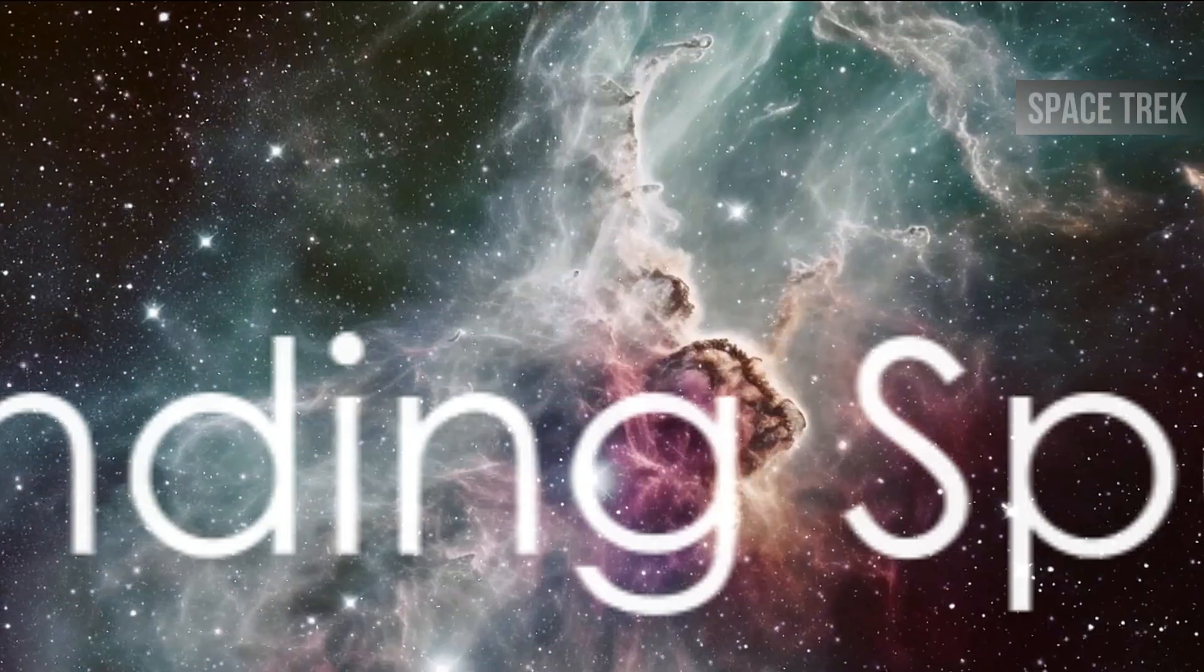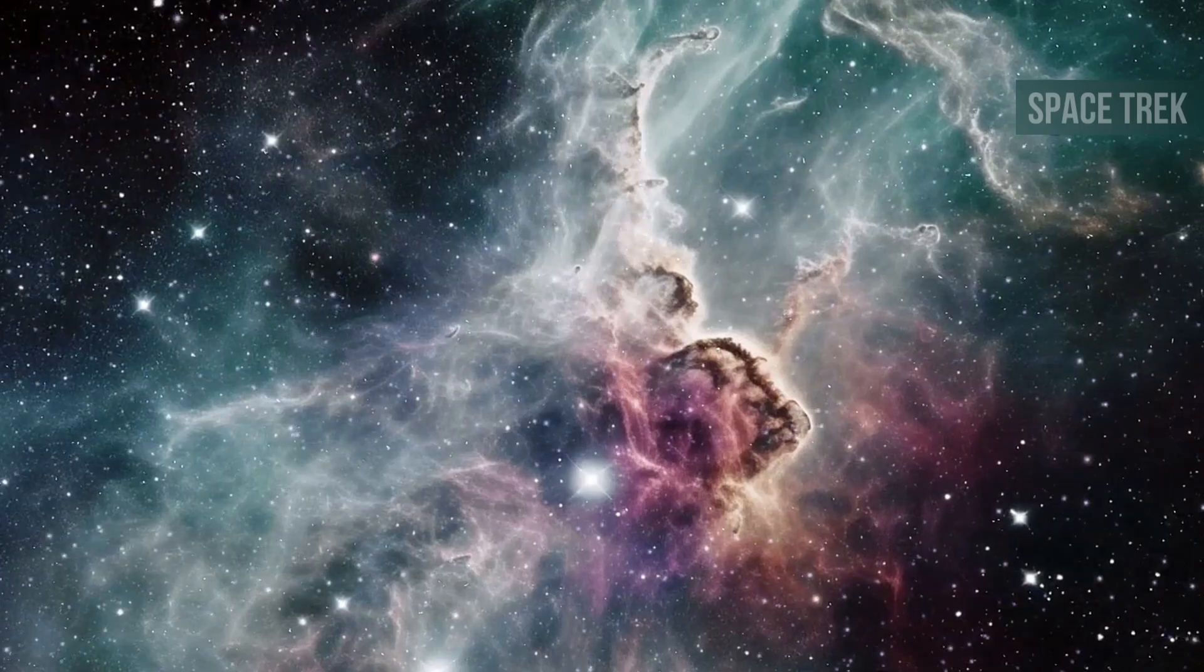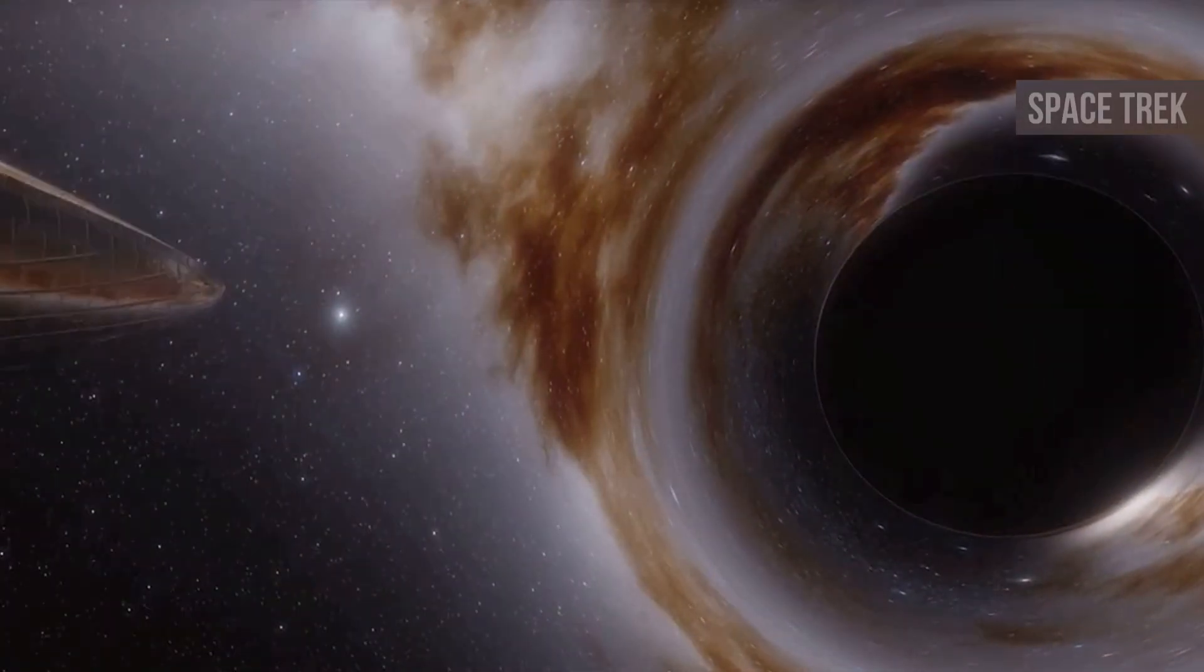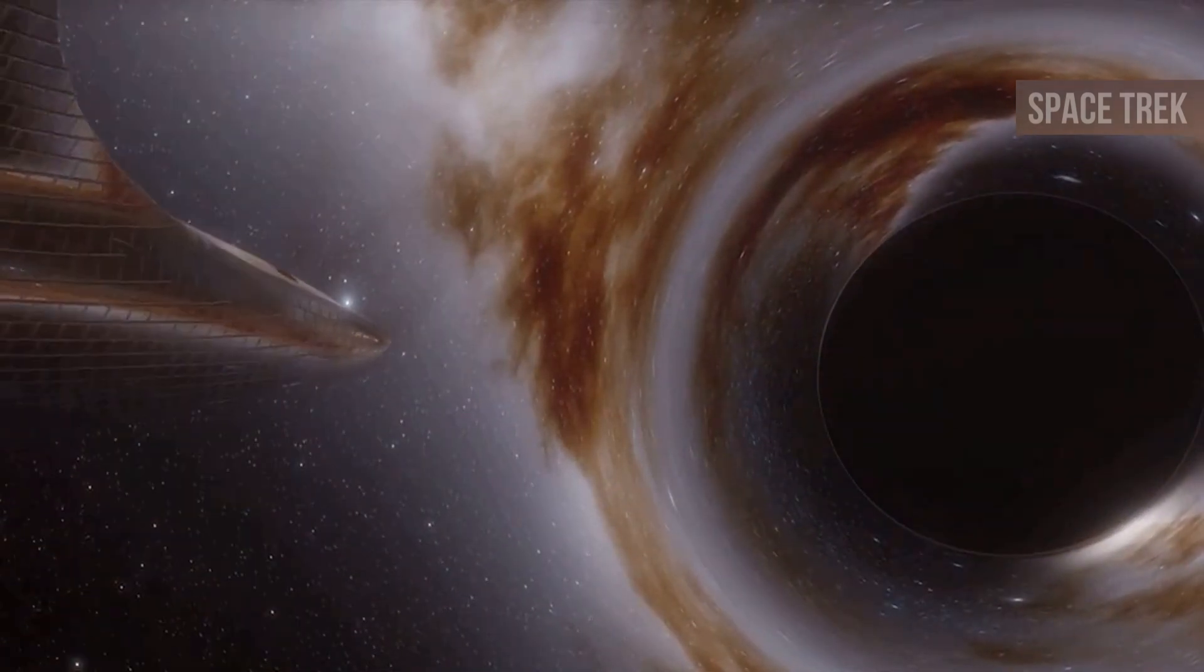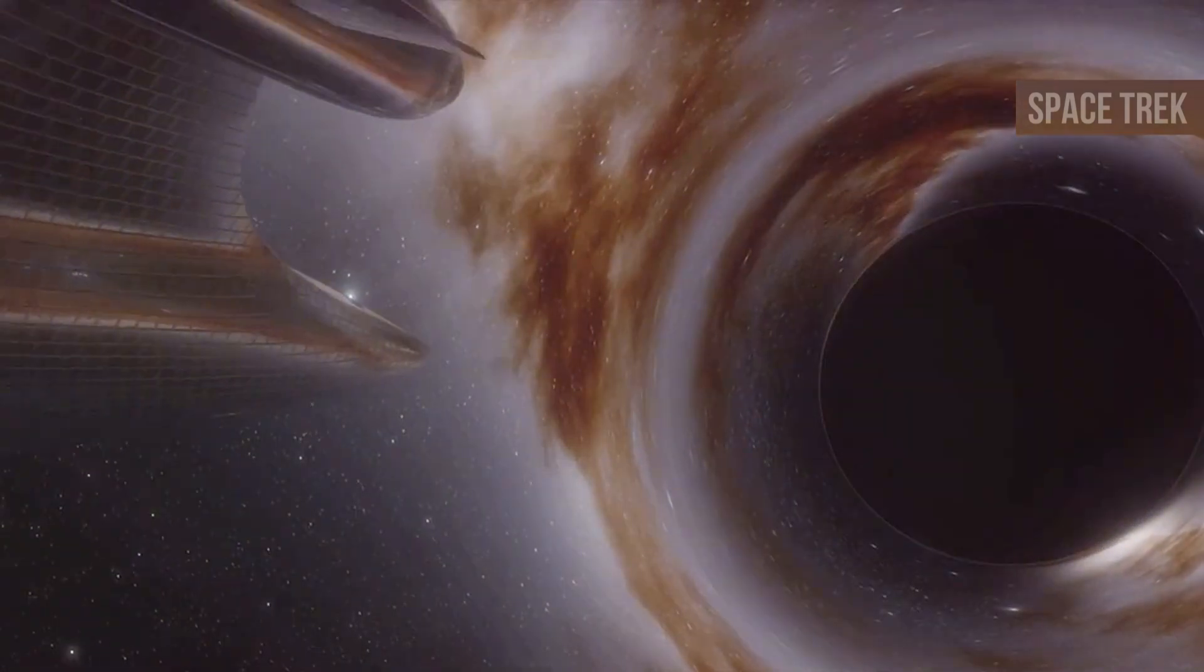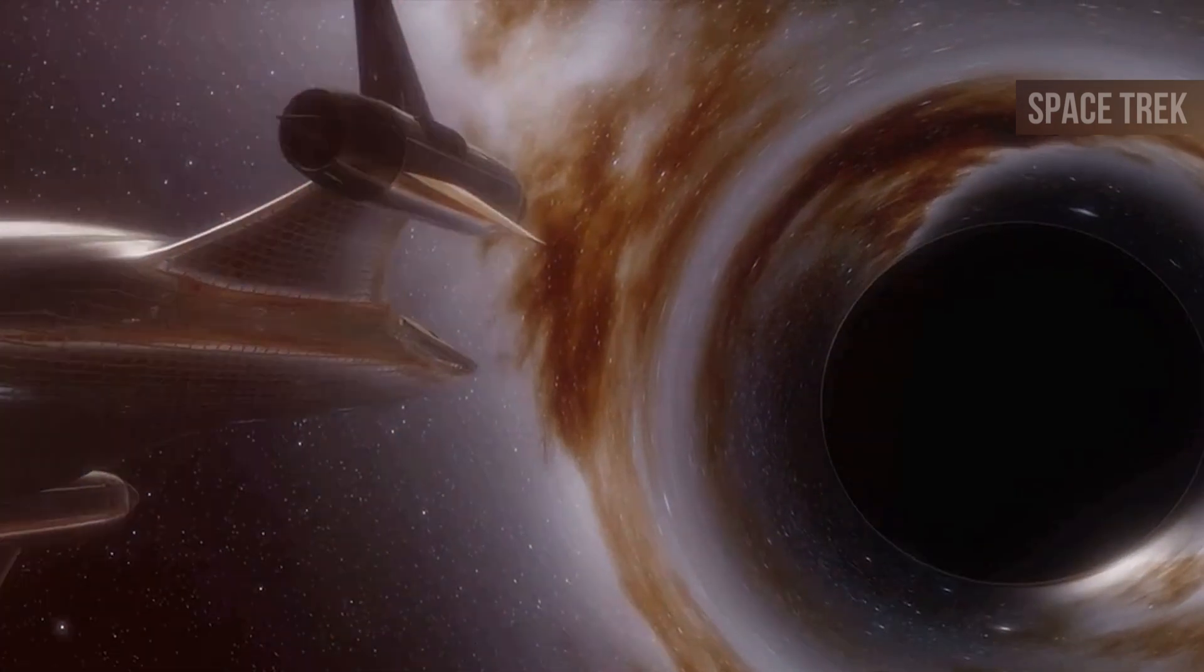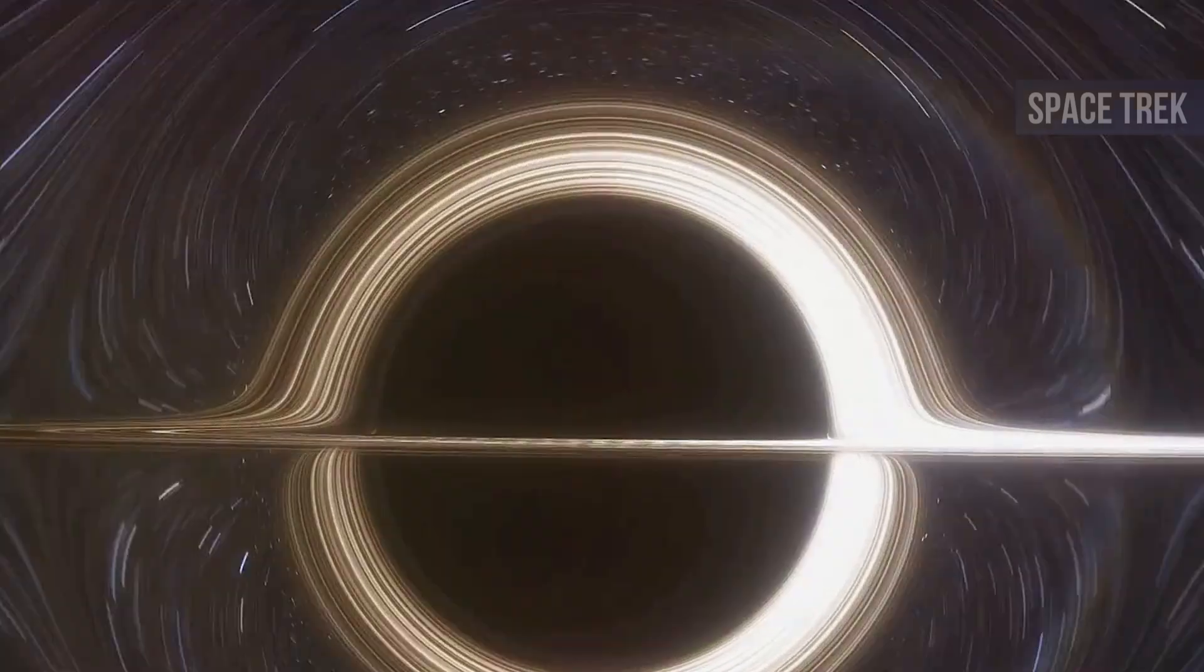To grasp this concept, we need to familiarize ourselves with the theory of spacetime. Imagine space as a vast two-dimensional surface, like a trampoline. Now picture a bowling ball resting at the center. The ball creates a depression, a curve in the fabric of the trampoline. This is akin to how massive objects, like planets and stars, bend the fabric of spacetime.